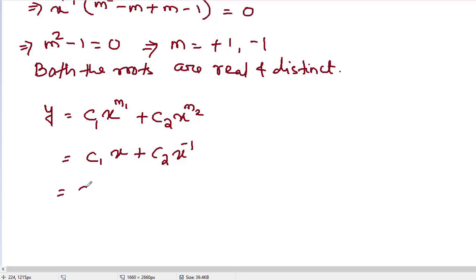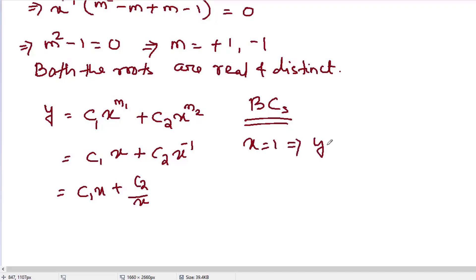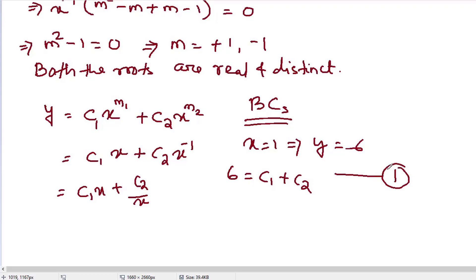So the general solution is y = c1·x + c2/x. Now the boundary conditions are given. When x equals 1, y equals 6. Putting this value in: 6 equals c1 plus c2. Let's call this equation 1. The other boundary condition given is dy/dx at x equal to 1 equals 2.